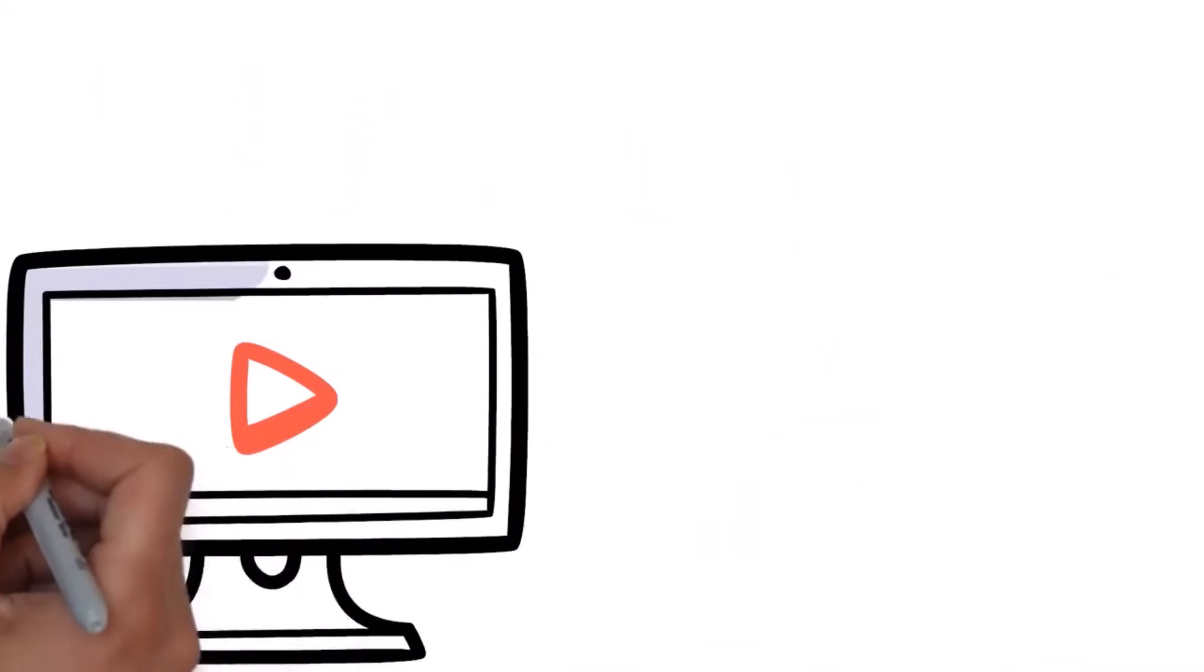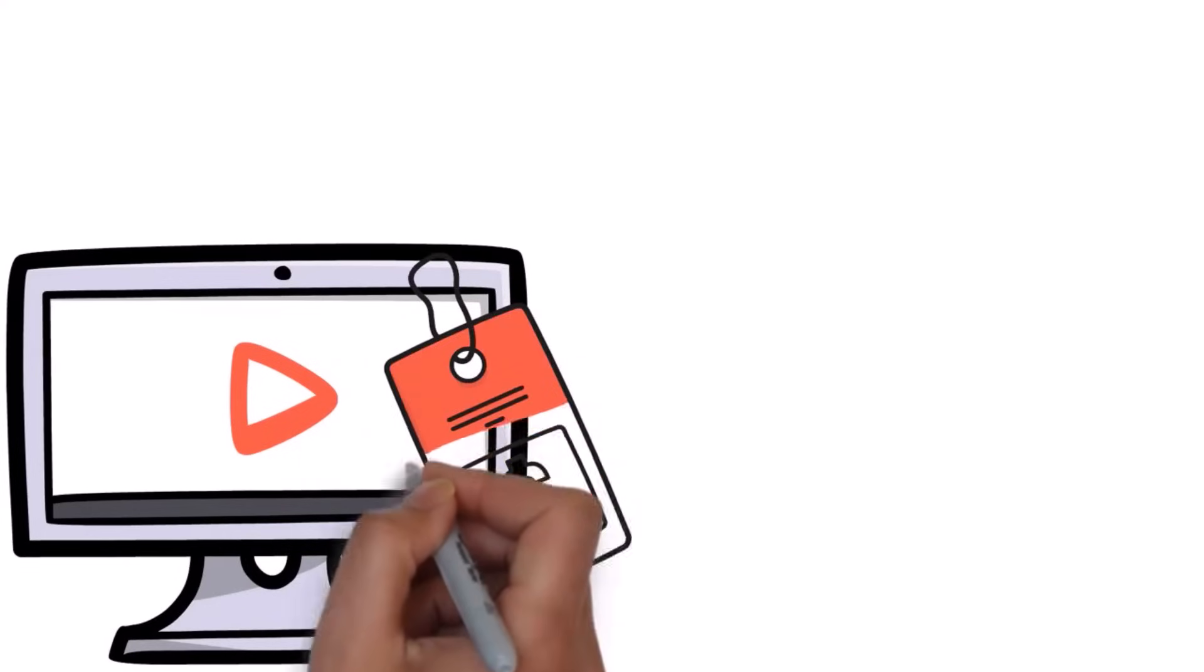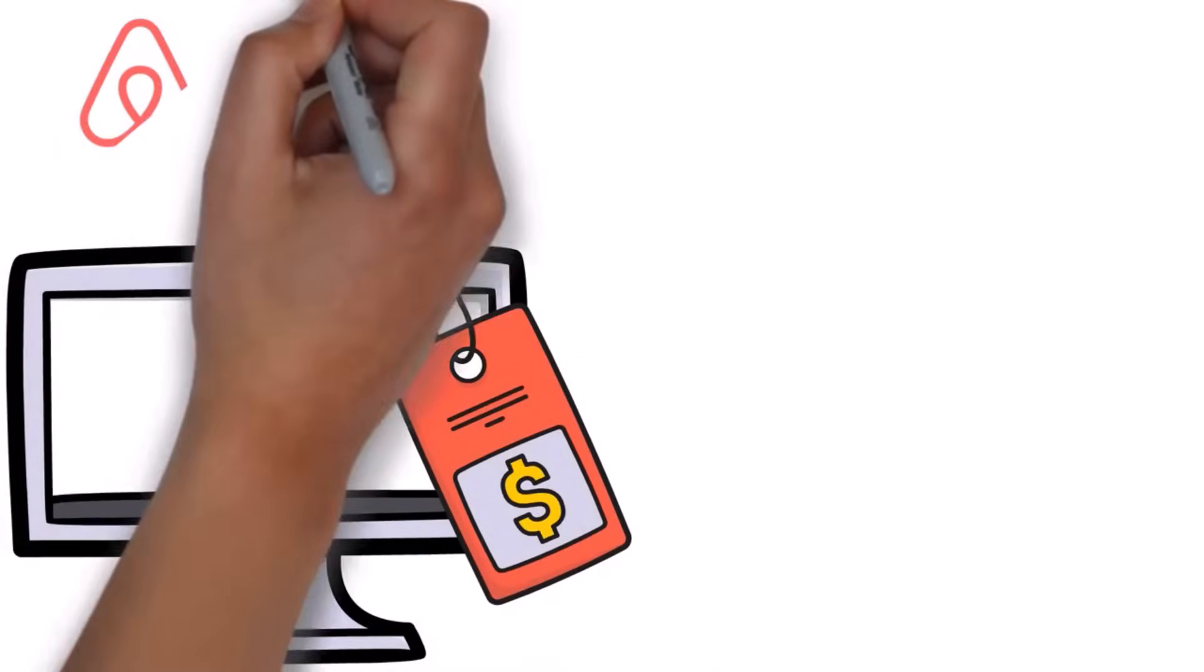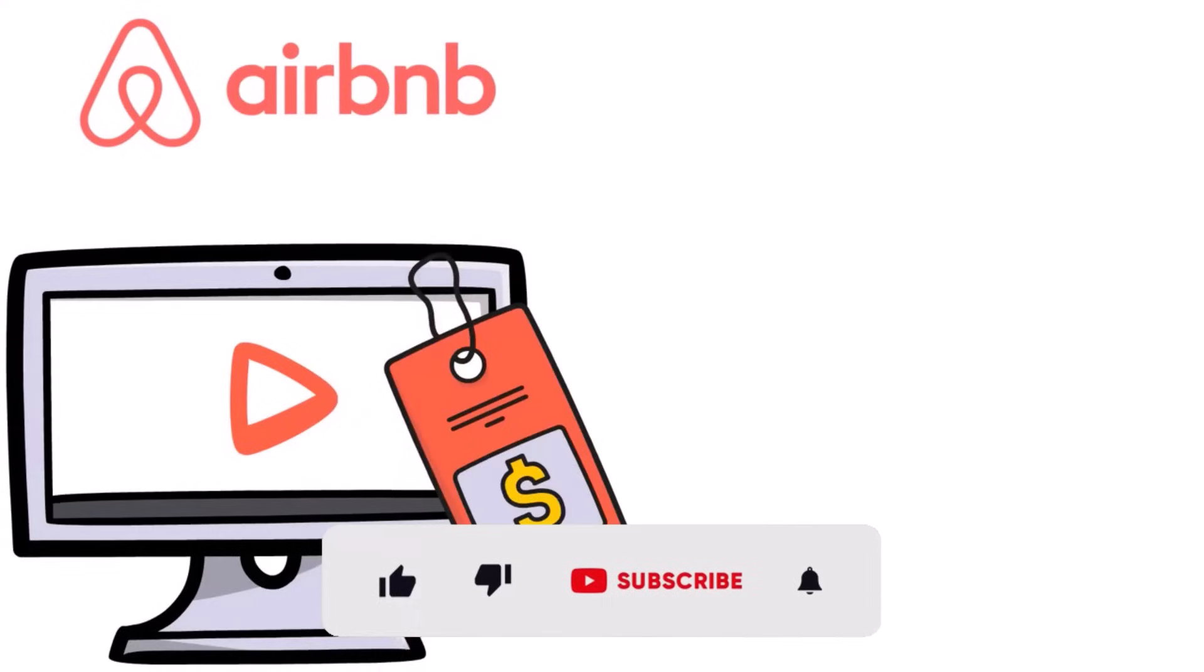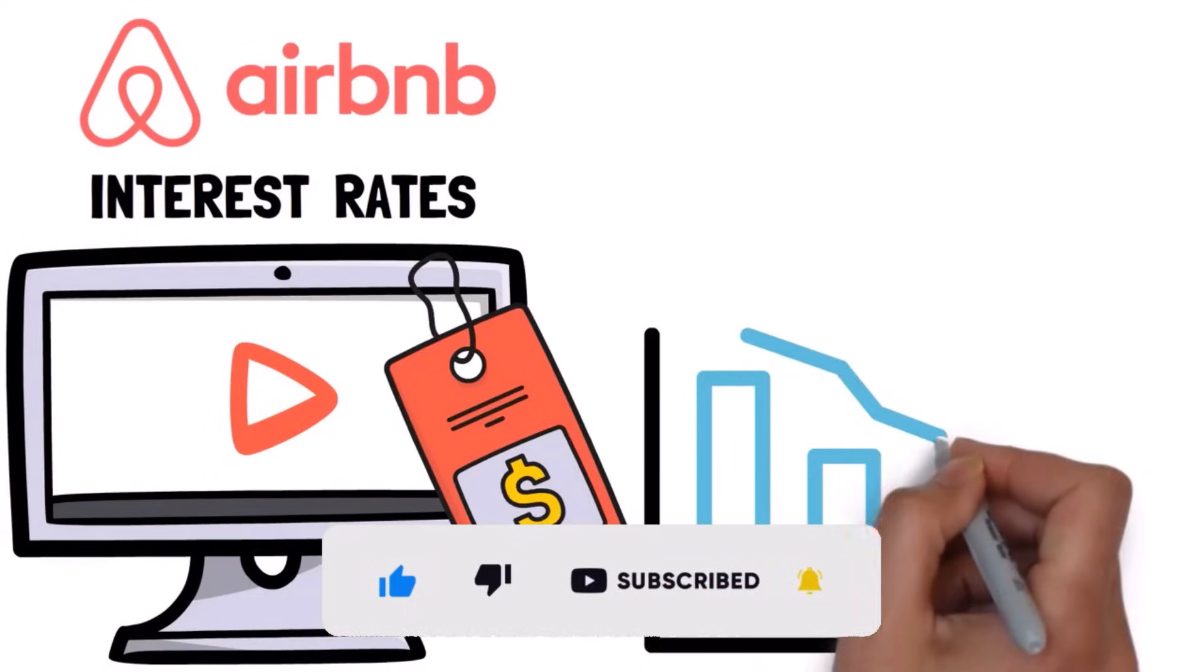So in this video, we're going to be discussing affordability, ghost inventory, not shadow inventory - this is something totally different - the Airbnb bust that's currently happening, interest rates and my perception of the impending recession.